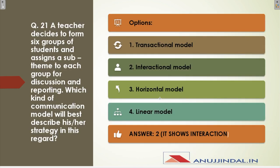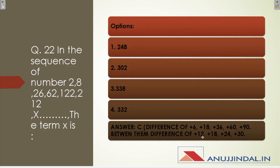Question twenty-one: a teacher forms six groups and assigns sub-themes for discussing and reporting. Which communication model best describes this strategy? When you have group interaction, themes, projects, assignments, and reporting, interaction between students is very important. The direct answer is the interactional model, which is very important and easy to understand in the context of group discussion.